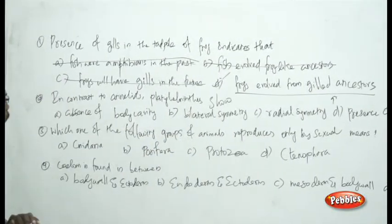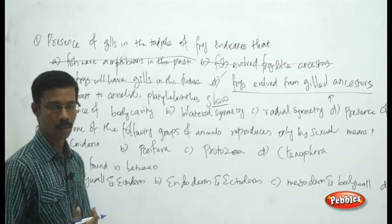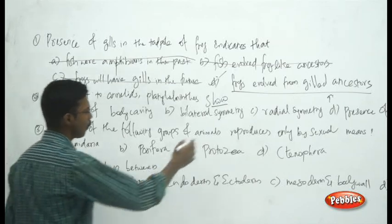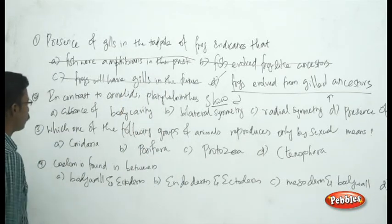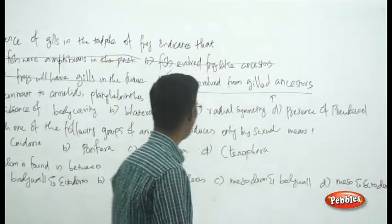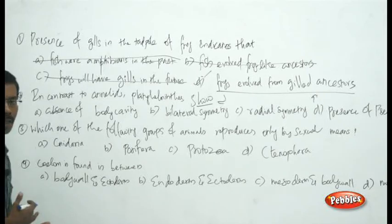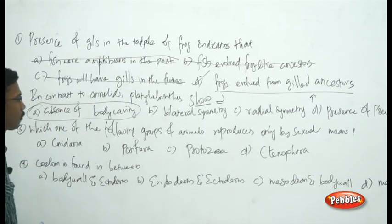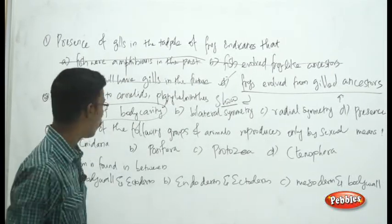See the next question: in contrast to Annelida, Platyhelminthes show... This question compares characteristics of two different phylums. You should know the basic characters of each phylum thoroughly. The choices include absence of body cavity, bilateral symmetry, radial symmetry, and presence of pseudocoelom. In Annelida, they have a true body cavity — they are true coelomates. In contrast, Platyhelminthes have an absence of body cavity. That is the correct answer.